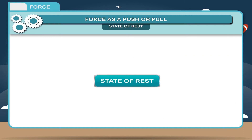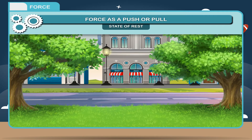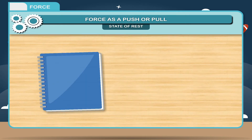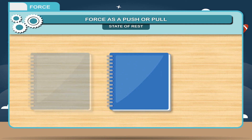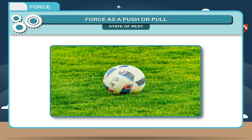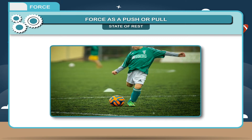State of rest: An object is said to be in the state of rest if it does not change its position with respect to its surroundings. For example, a book placed on a table remains there unless you change its place. A football on the ground remains there unless a player kicks it to change its position.